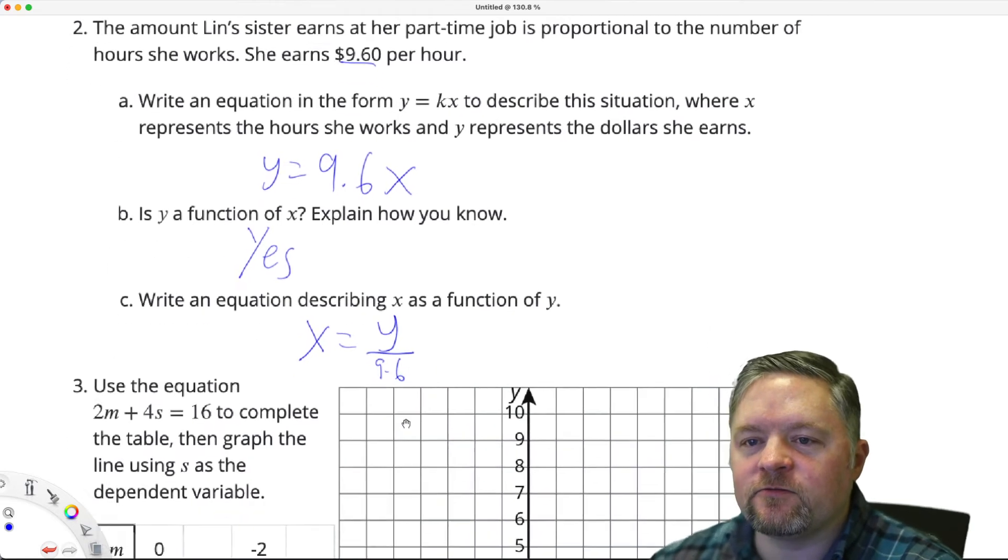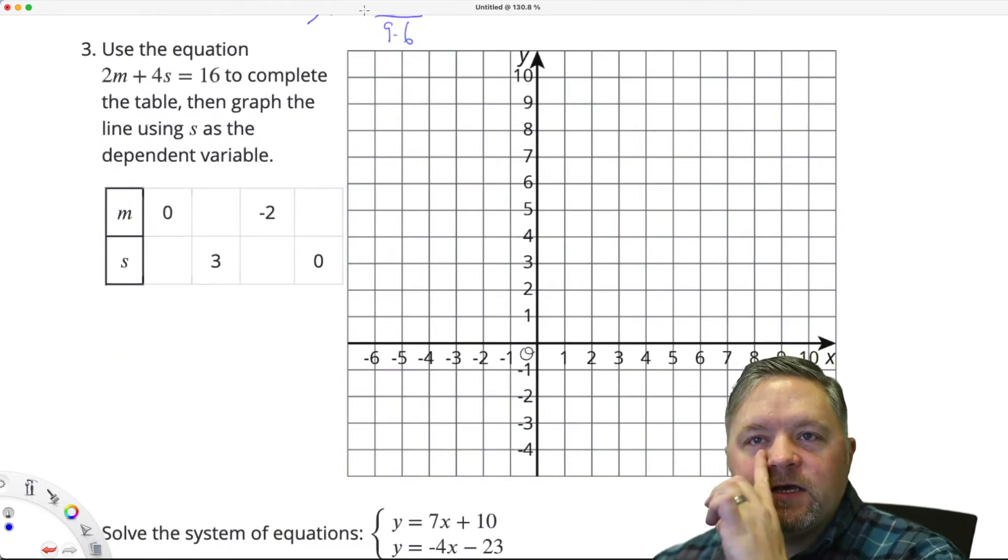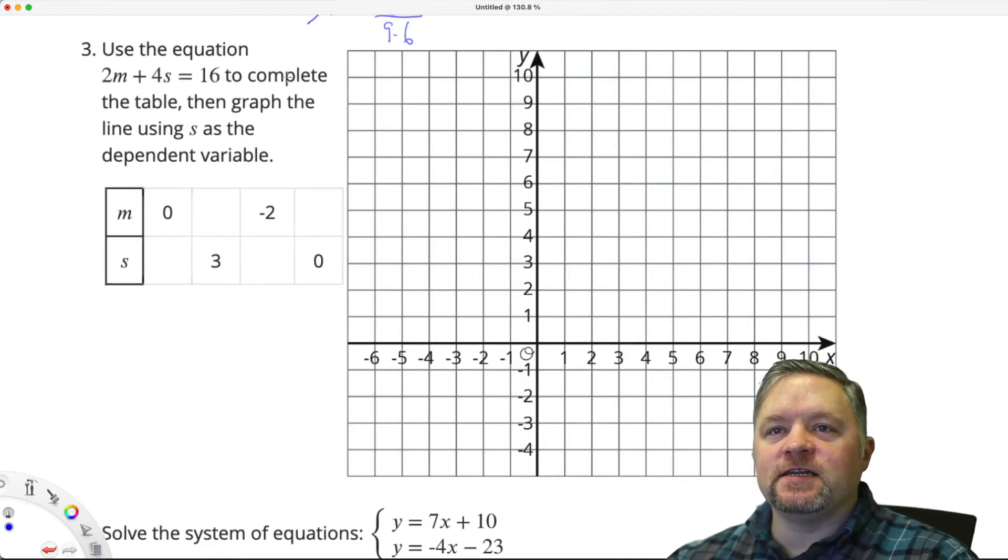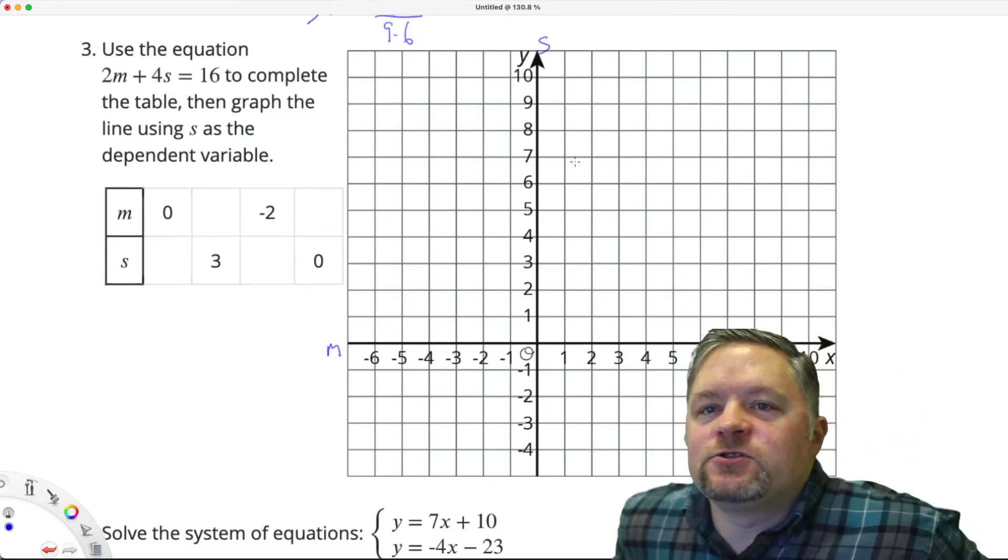Okay, number three. Use the equation 2m plus 4s equals 16 to complete the table. Then graph the line using S as the dependent variable. So that means I'll even label this nicely. If S is dependent, M is independent. Label which one is which.